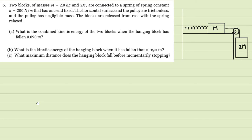So our next stop is this problem. Two blocks of masses m, m is two kilogram in value, and twice m, so that means it's four kilogram, connected to a spring of spring constant k equal to 200 newton per meter that has one end fixed.